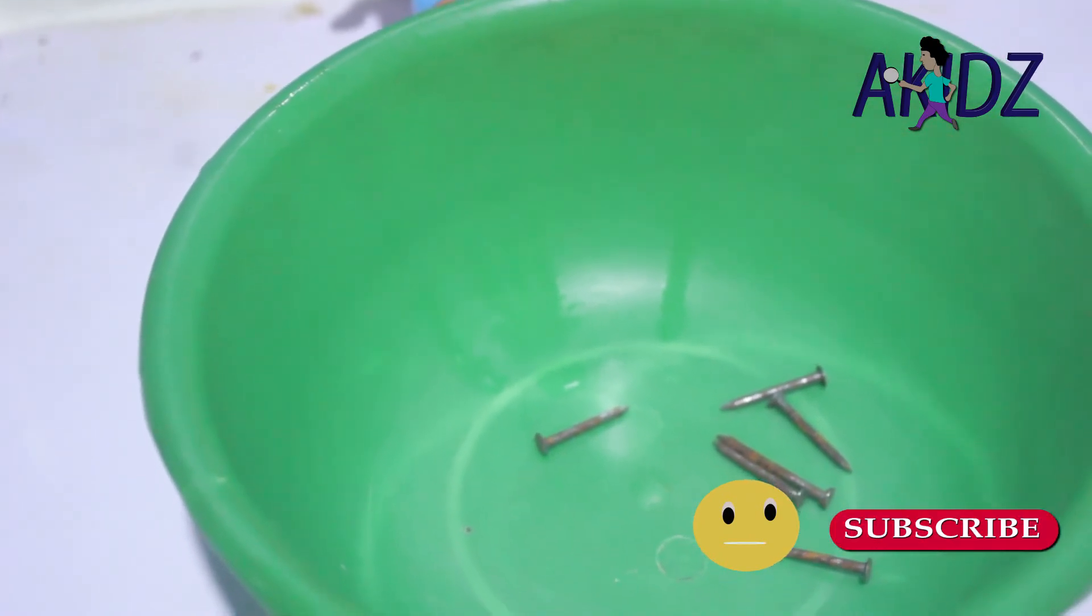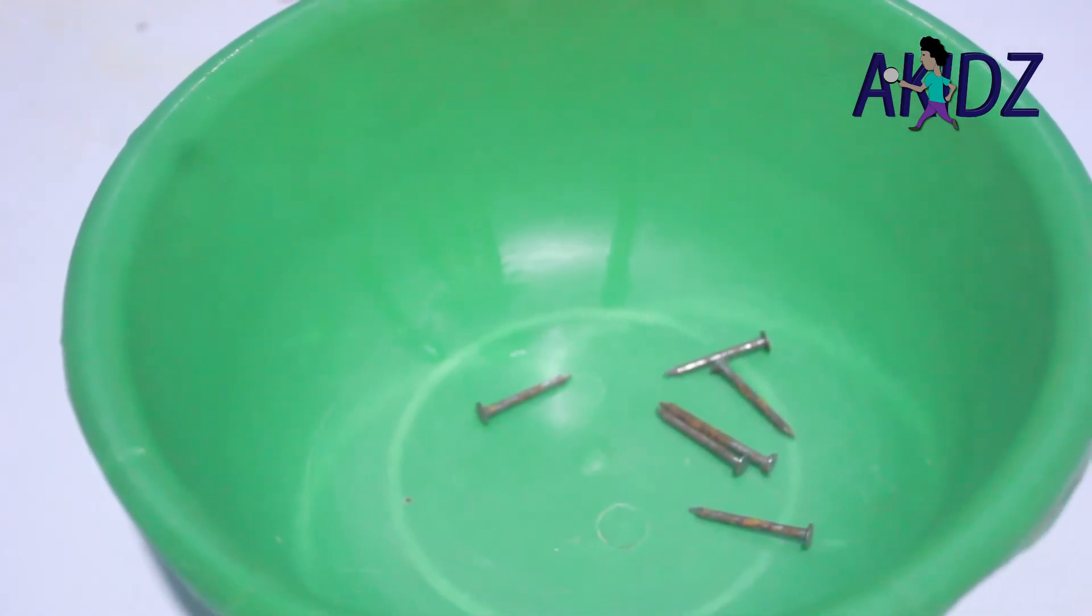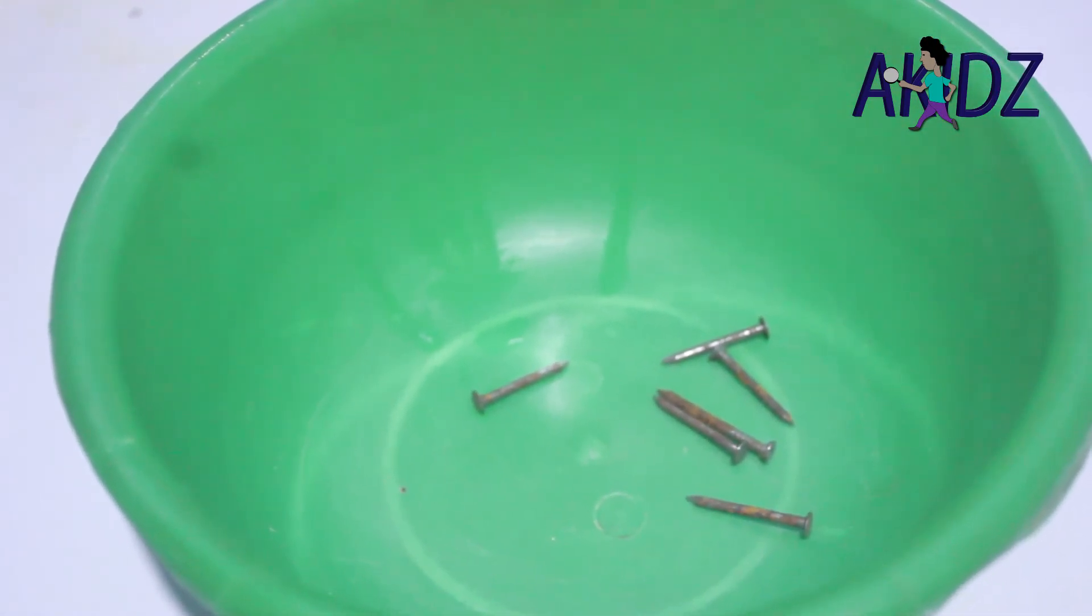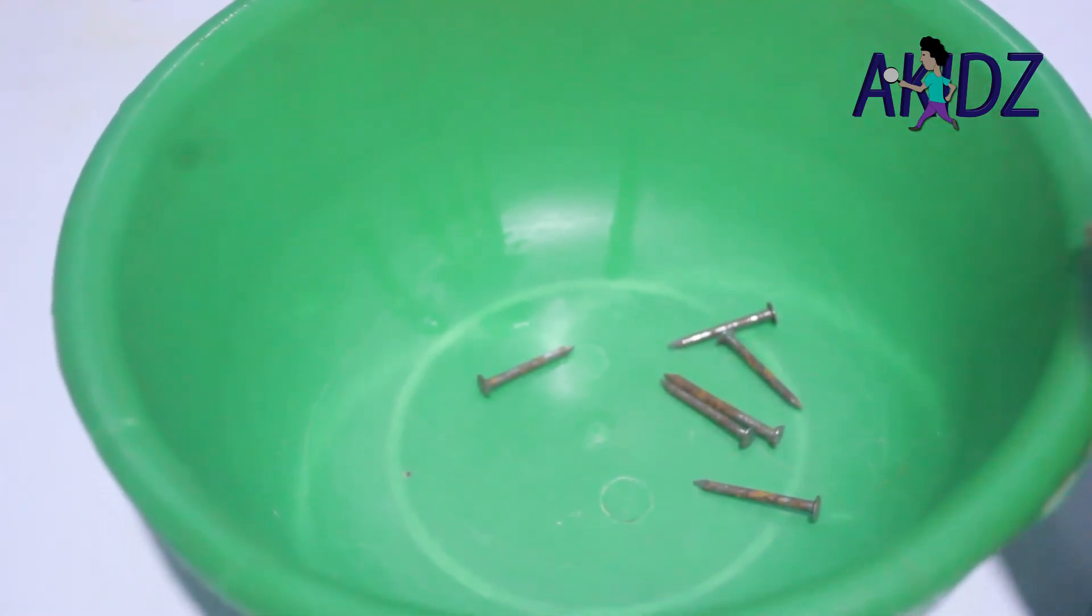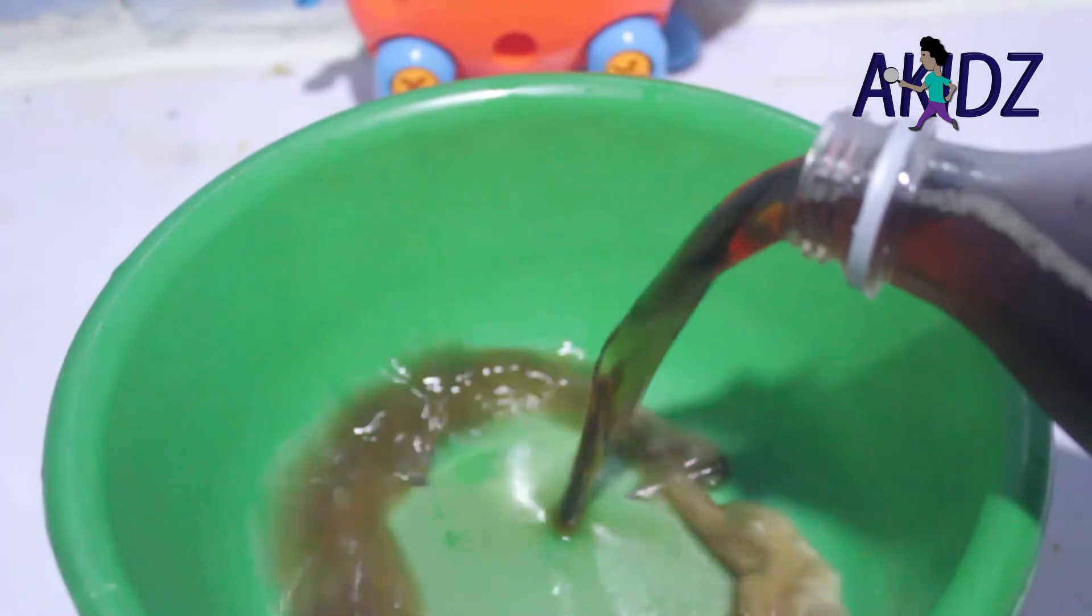Then we have removing rust from nails. I left the nails overnight and this is my result. The phosphorous in the Coca-Cola reacts with the ions to form a ferrous phosphate.